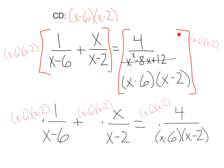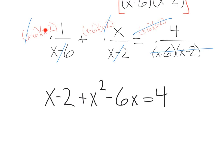After we distribute that out to each term, my favorite part, once again, canceling things out. We got x minus 6, x minus 2 here, and it looks like everything is going to go on the right side. Distributing out, we get x minus 2 plus x squared minus 6x equals 4. Now, let's solve.